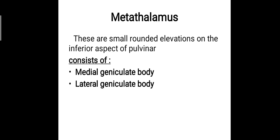The metathalamus are small rounded elevations on the inferior aspect of the pulvinar. In the previous class we discussed the anatomy of the thalamus and we saw what the pulvinar is. The metathalamus consists of a medial geniculate body and a lateral geniculate body.